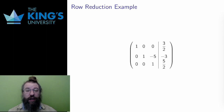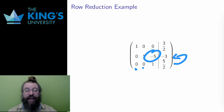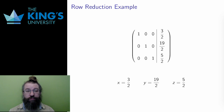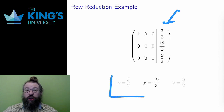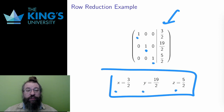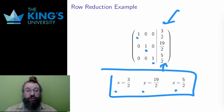Now I want to get rid of the negative five. To do that, I add five times the last row to the second row. In the first two entries I am adding five times zero, so nothing changes. I add five to negative five in the third entry to give zero, and the last entry is negative three plus five times five halves, so plus twenty-five over two, which gives nineteen over two. Now I am done. This is the reduced row echelon form, and I can just read off the solutions: x equals three halves, y equals nineteen over two, and z equals five over two. Using just the three row operations, I have manipulated the matrix into one where the solution is obvious. This is the algorithm.